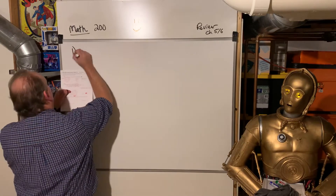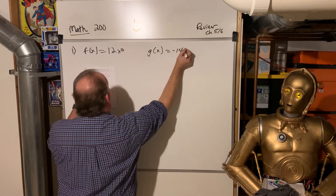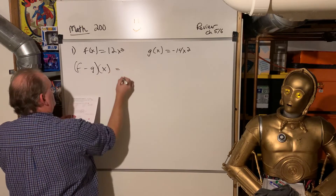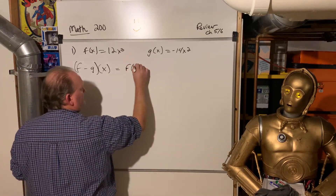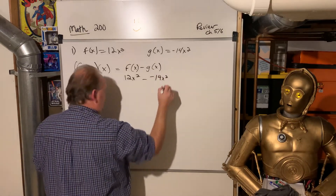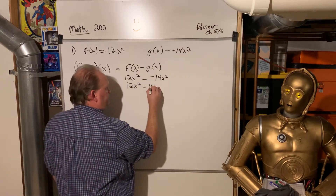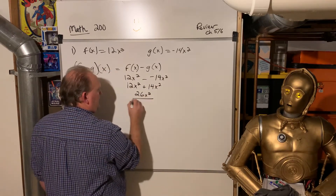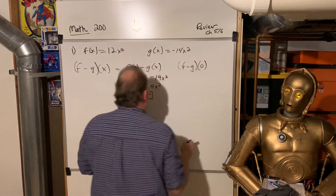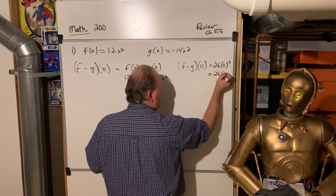Number 1: f of x equals 12x squared, and g of x equals negative 14x squared. They want me to find f minus g of x, which means f of x minus g of x. That's 12x squared minus negative 14x squared. Got to be careful — minus a negative is a plus. So we get 26x squared. Then they want f minus g of 0, so we put 0 in for x: 26 times 0 squared equals 0.